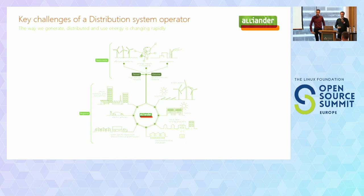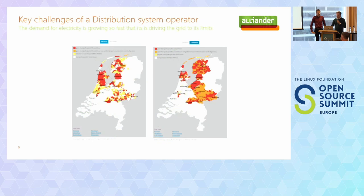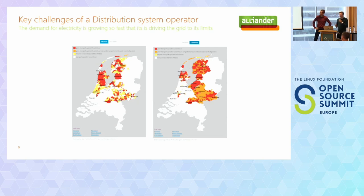Fossil fuel power stations are closing down in order to reduce CO2 emissions. We see an enormous increase in the use of wind energy and solar energy, and the number of electric cars is growing rapidly. Distribution system operators like Alliander face major challenges to support this transition. In the Netherlands, we have one of the most reliable electricity grids in the world. However, this grid is not designed for the rapid developments happening today, and the demand for electricity is growing so fast that it's driving the grid to its limits. Even though we have significantly increased our investments in expanding the grid in the last few years.